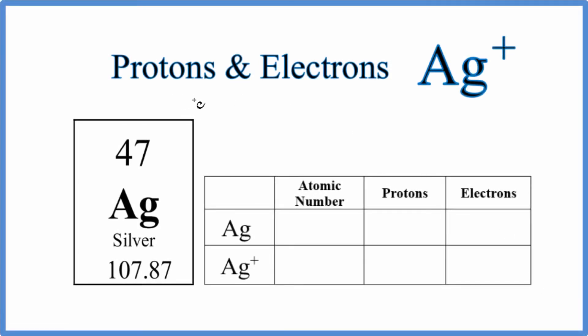In this video, we'll find the number of protons and electrons for Ag+. This is the silver cation. So we go to the periodic table here, and first let's just look at silver.